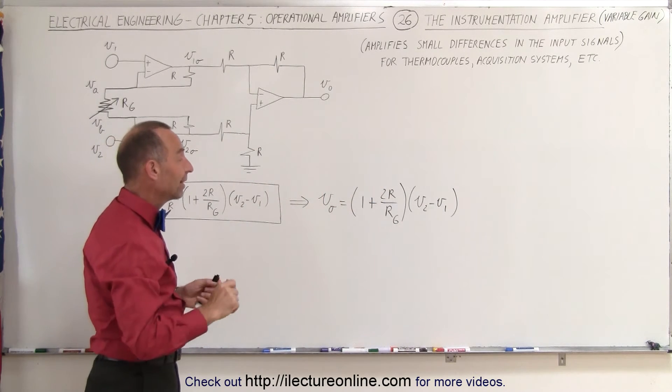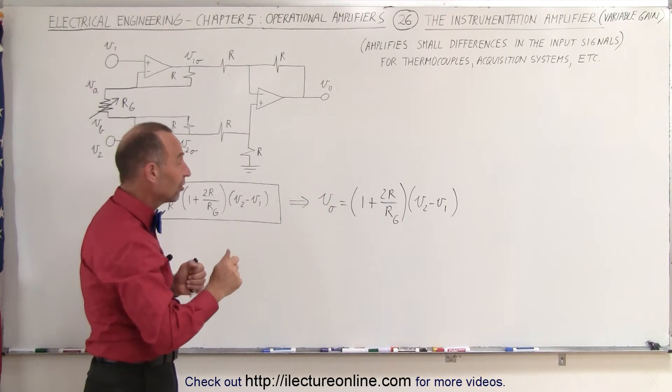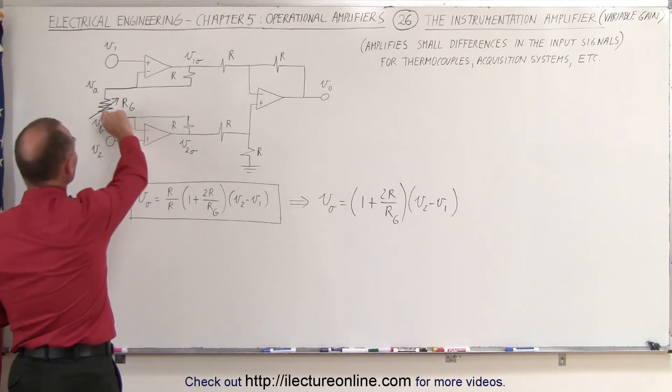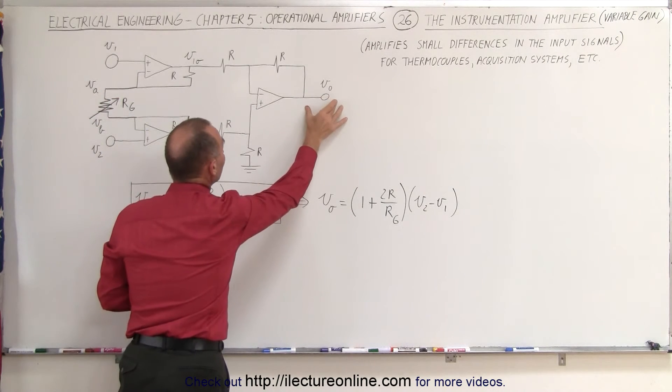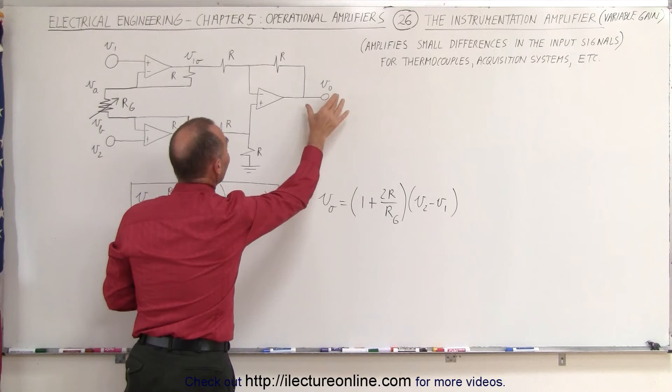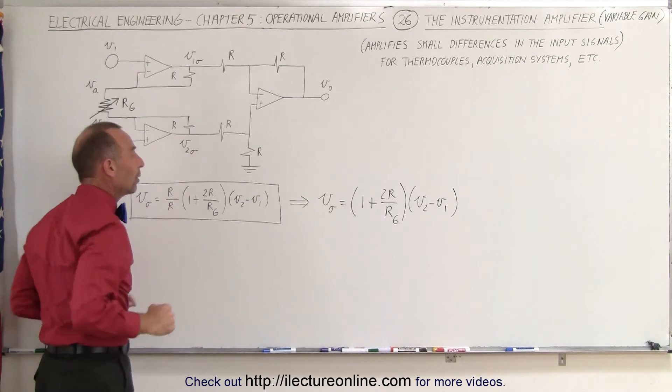And what this means now is that the amplification of the signal can simply be controlled by a single resistor here. This is now a variable resistor. We can set the variable resistor to the value that we want so that the output voltage is a certain number times the difference between the two inputs.